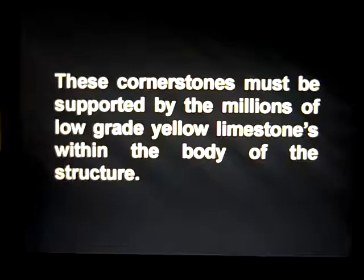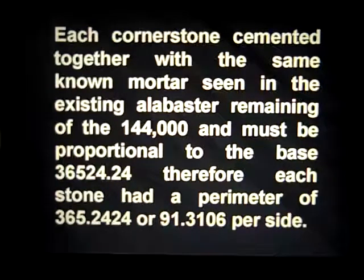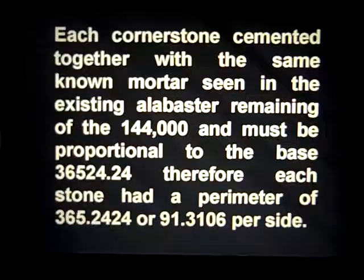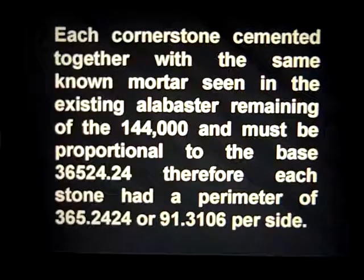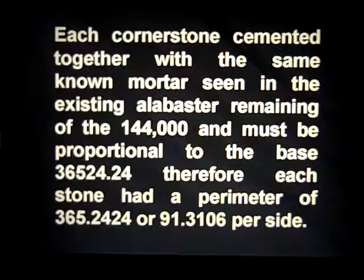These cornerstones must be supported by the millions of low-grade yellow limestones within the body of the pyramid structure, each cornerstone cemented together with the same known mortar seen in the existing alabaster — the remaining 144,000 alabaster stones — and must be proportional to the base: 36,524.24. Therefore each stone had a perimeter of one-hundredth of that: 365.2424, or 91.31060 pyramid inches per side.